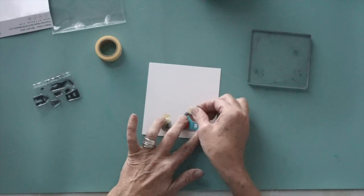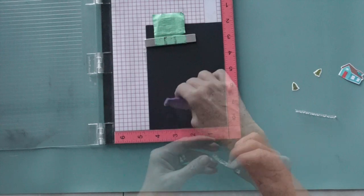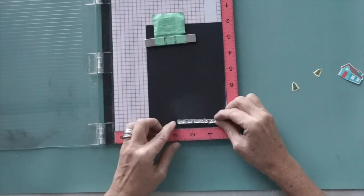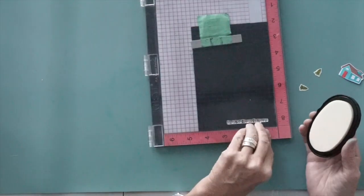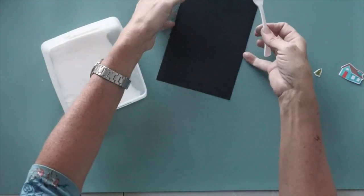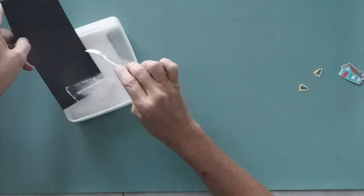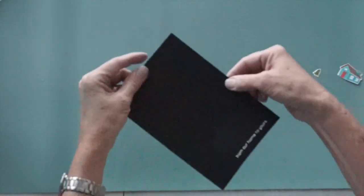Next I stamped the sentiment from the little stamp set that says from our home to yours onto black cardstock using Altenew embossing ink. I used white embossing powder and heat embossed it and then I cut it into a little narrow strip.